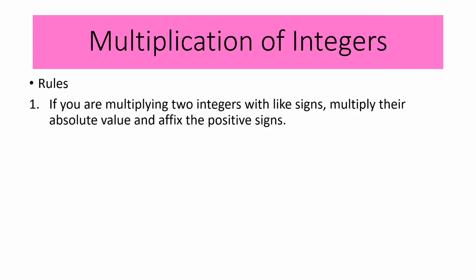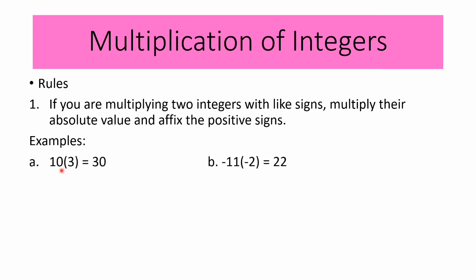Now let us proceed with the multiplication of integers. The first rule: if you are multiplying two integers with like signs, multiply their absolute values and affix or copy the positive sign for the product. For example letter A: 10 times 3 equals 30. We are multiplying two integers with like signs — both positive — so the product is positive 30.